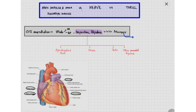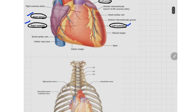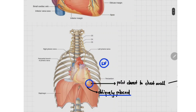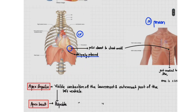To understand the apex impulse, we first need to look at the anatomy of the heart. This is the left atrium, this is the left ventricle, this is the right atrium, and this is the right ventricle. The heart is placed obliquely in the rib cage, and the apex part is closest to the chest wall. Whenever the left ventricle contracts, this part moves up and hits the chest wall. This visible contraction of the lowermost and outermost part of the left ventricle seen on the precordium is the apex impulse, and when palpated, it is known as the apex beat.